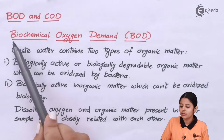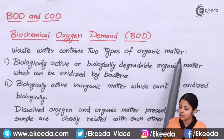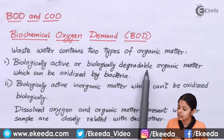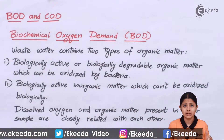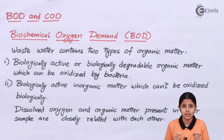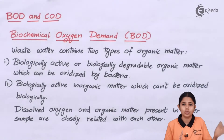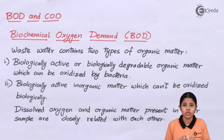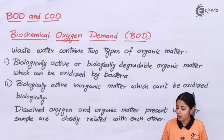BOD and COD. First we are going to study about BOD, that is biochemical oxygen demand. Wastewater contains two types of organic matter: biologically active or biologically degradable organic matter, which can be oxidized by bacteria. When I have biologically degradable organic matter, it will be oxidized easily. Oxidation always involves oxygen — oxygen gets used up in the process. This oxygen usage should never happen in water because the water's oxygen is preserved for the flora and fauna present in it.